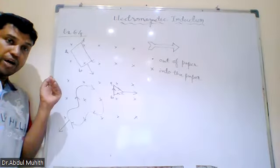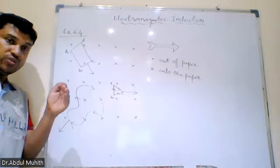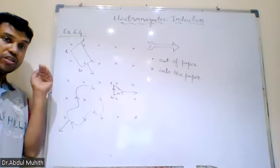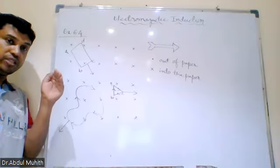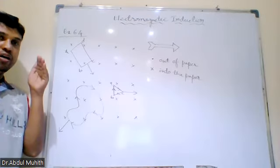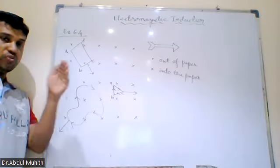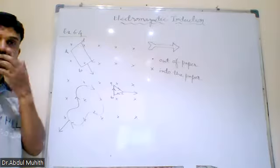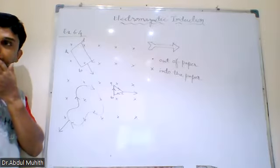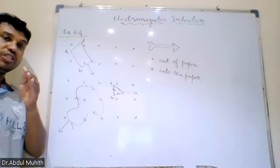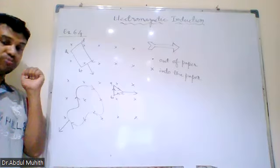The North of the bar magnet is moving, approaching — the North of the bar magnet is moving towards the point. Then North pole is close. And when it is moving away, it's repelled.